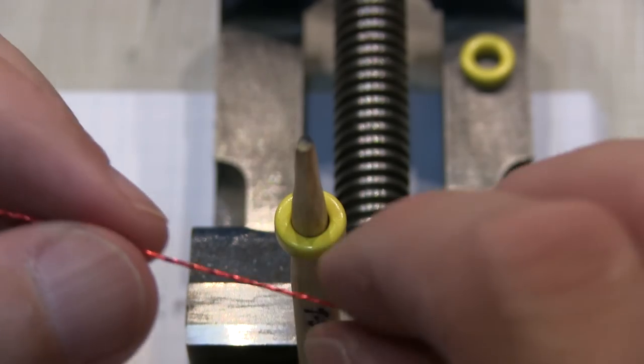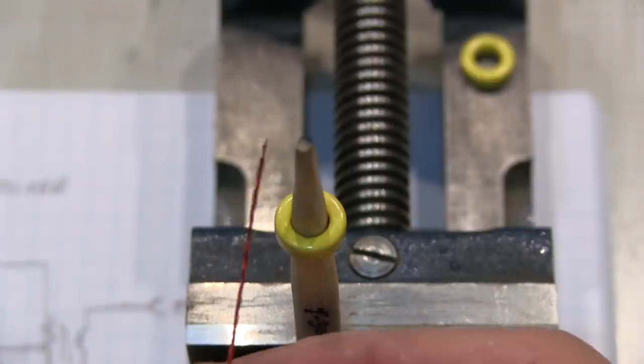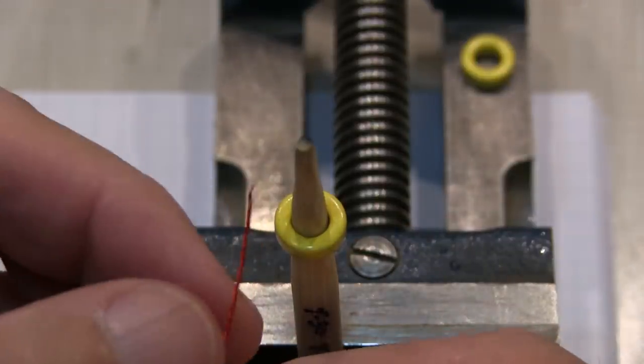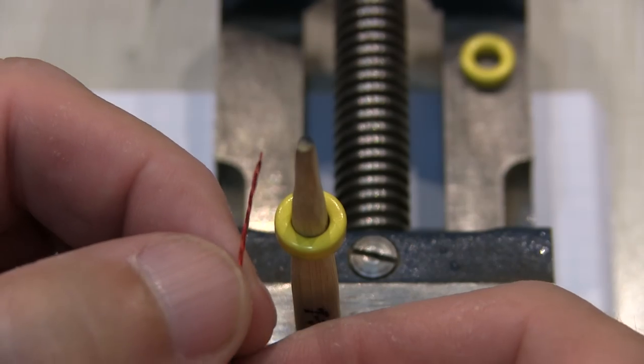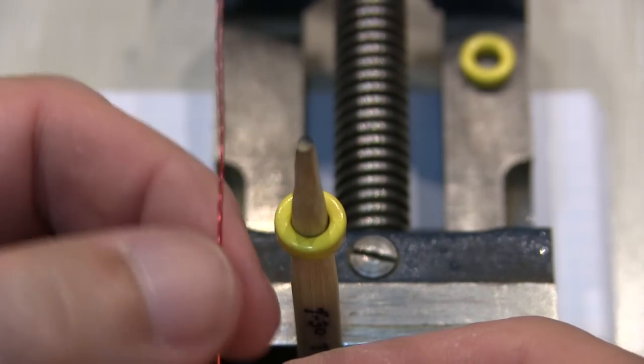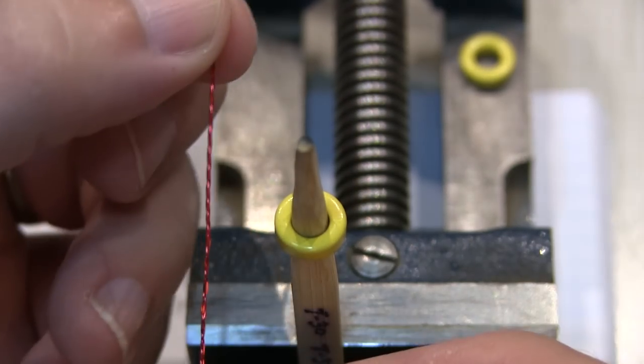And you want several turns per inch. I probably wound it a little bit tighter than I need to here. This is just a 30 gauge wire. And by winding them like this, you get a nice consistent wind for all three windings.